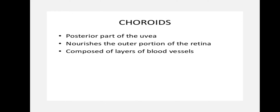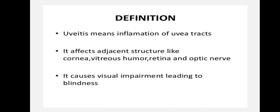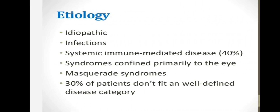The choroid is the posterior part of the uvea. It nourishes the outer portion of the retina and is composed of layers of blood vessels. Uveitis is the inflammation of the uveal tract — that is, the iris, ciliary body, and choroid — and it affects adjacent structures like the cornea, vitreous humor, retina, and optic nerve, causing visual impairment leading to blindness.